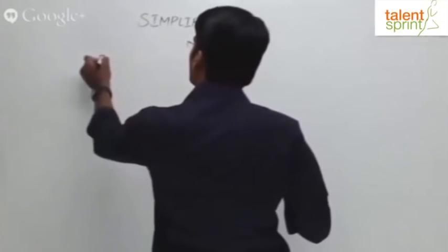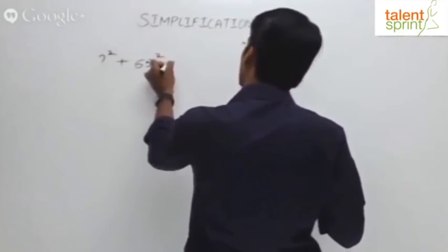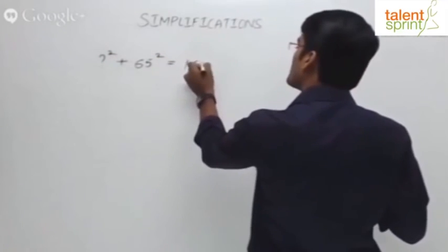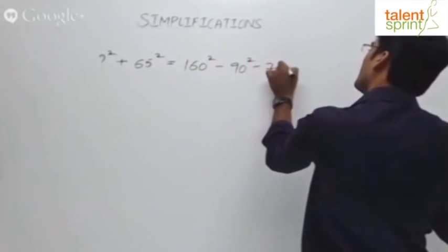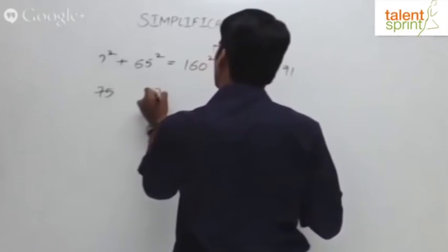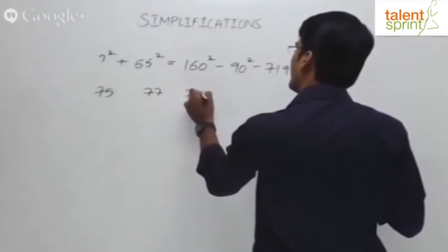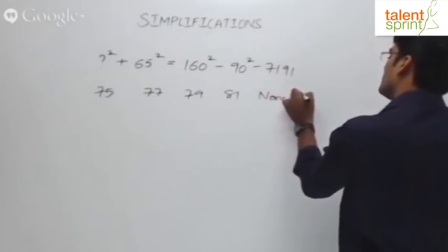Let me give you a question now. Look at this. Question mark squared plus 65 squared equals 160 squared minus 90 squared minus 7191. I will give you the options: 75, 77, 79, 81, and fifth option is none of these.